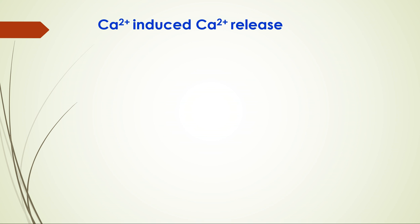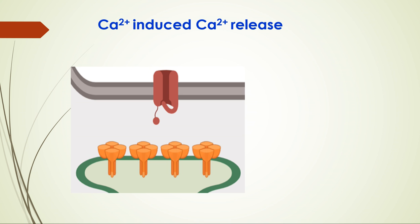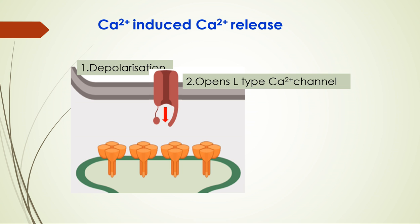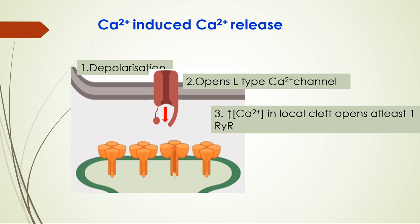Now let's see how calcium is released from the sarcoplasmic reticulum. The first step is always action potential arrival. The action potential comes to the T-tubule. The DHPR is a voltage-sensitive channel, so mechanical coupling does not occur here — instead, the channel opens due to depolarization. Depolarization leads to opening of the L-type calcium channel. Calcium enters and accumulates in the local cleft — called the junctional cleft — increasing calcium concentration locally. This calcium then acts on ryanodine receptors, which have calcium-binding sites, causing them to open.